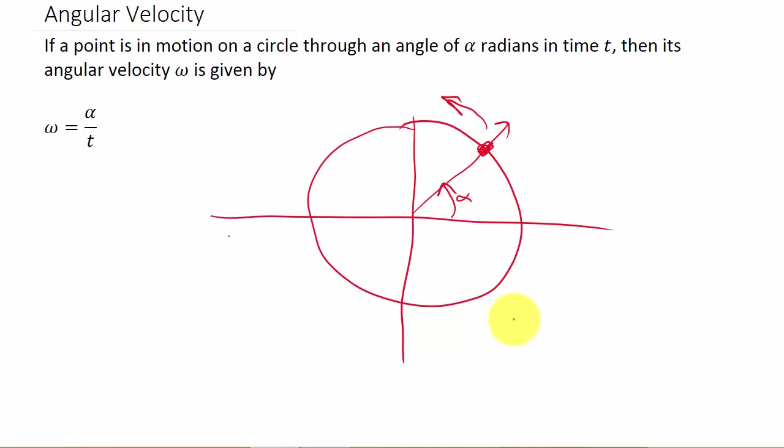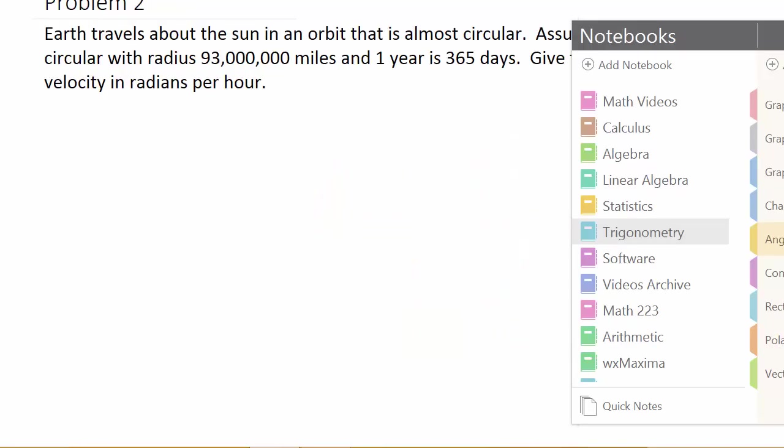Angular velocity is given in radians per and then whatever time it is, like radians per minute, radians per second, you know, whatever. All right, so let's look at example two.